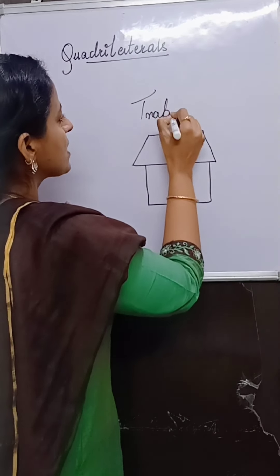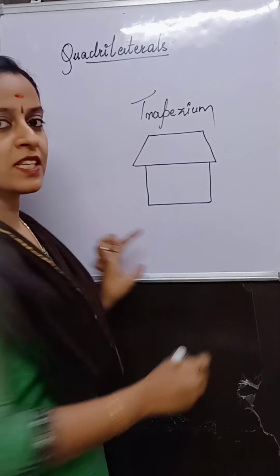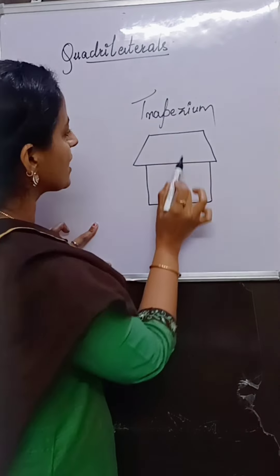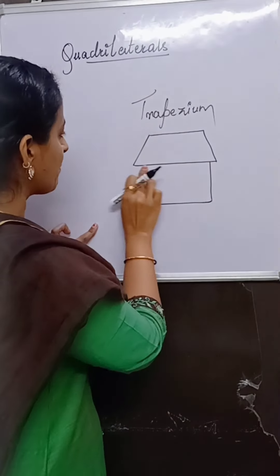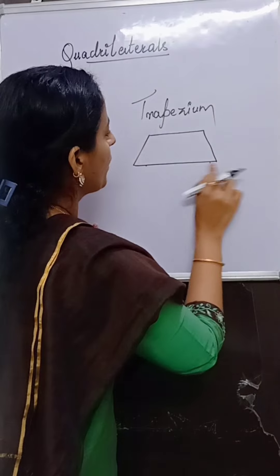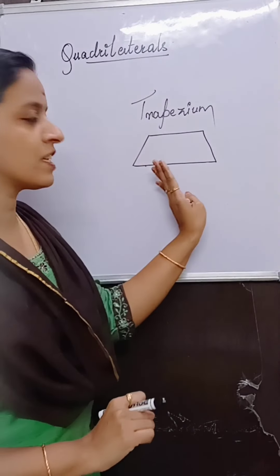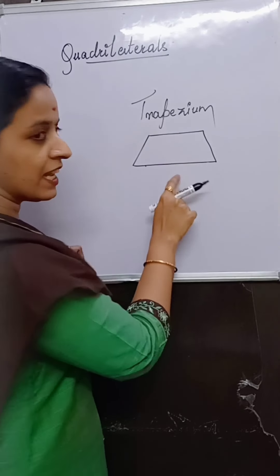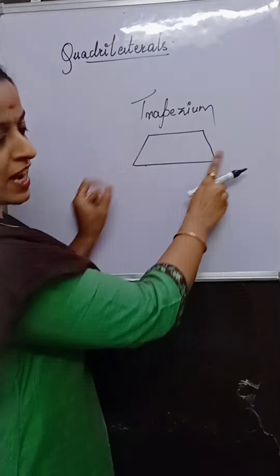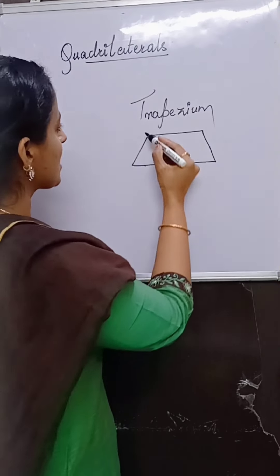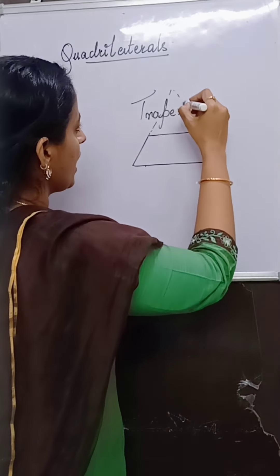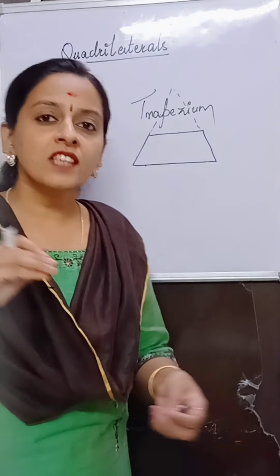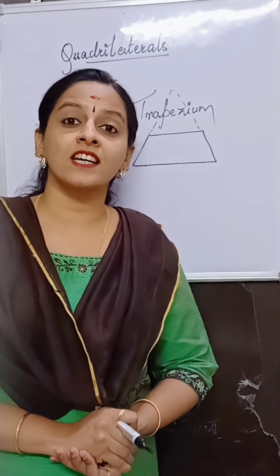What is a trapezium? Trapezium is a quadrilateral where one pair of opposite sides are parallel, whereas the other pair of opposite sides are non-parallel — they will intersect.